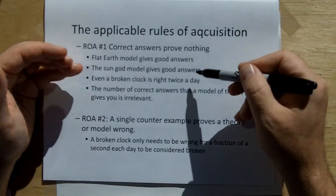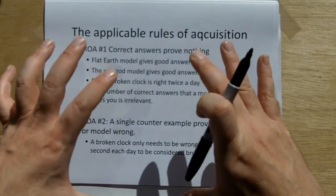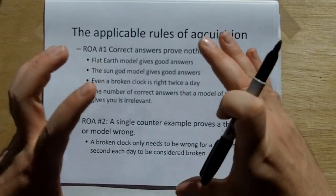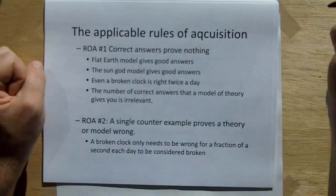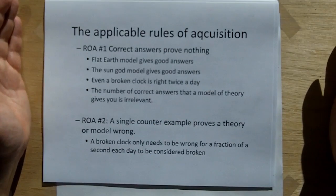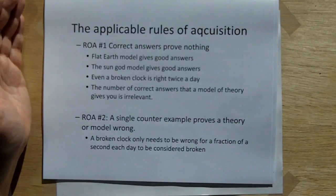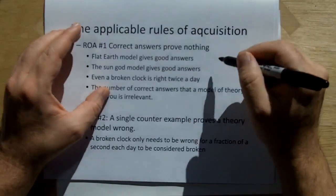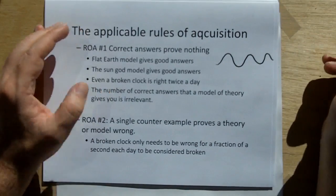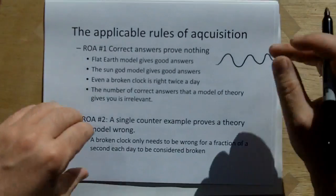That brings us to basic theory of scientific theory, which I've encoded in what's called the rule of acquisitions. And the first rule of acquisition is that correct answers prove nothing. It doesn't matter how many good answers your model of theory gives. If it only has one wrong answer, the theory or model is wrong. Like you would say the sun god gives a good, and that's another thing. A lot of models out there only tell you what's going to happen, not why it happens. That's a critical point here. Like the sun god model tells you the sun's going to rise in the east and settle in the west. It doesn't tell you why.